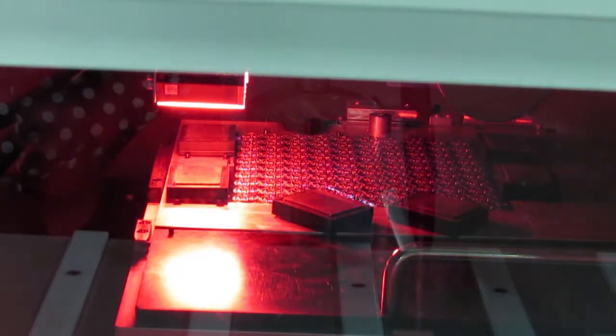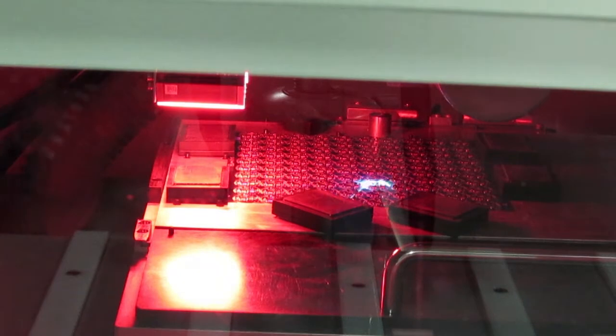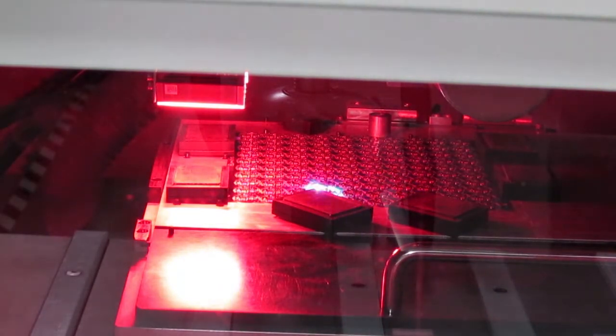The ultraviolet beam is not visible. The flashes you see are illumination for machine vision. The UV laser makes extremely narrow, very precise cuts in any shape, with no mechanical stress on the board.